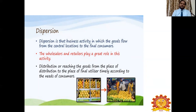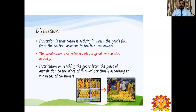How will you distribute this product to the final consumer? Through market functionaries. In a marketing channel, you not only have producer and consumer at both extremes; in between them you have lots of market functionaries — wholesalers, primary wholesalers, secondary wholesalers, middlemen, commission agents, brokers, retailers, and then the ultimate consumers. Wholesalers and retailers play a great role because once the product is transferred from the central place, it reaches either the wholesaler or retailer. As consumers, we don't go to the central marketplace all the time — we visit the wholesaler or retailer to get our product. Distribution means reaching goods from the place of distribution to the place of final utilizer, that is the consumer, timely according to the need of the consumer.